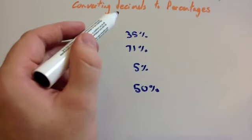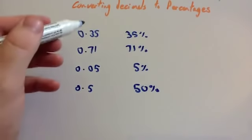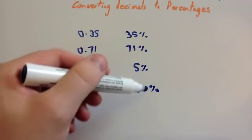So to change a decimal to a percentage, you multiply the decimal number by 100 and add the percentage sign.